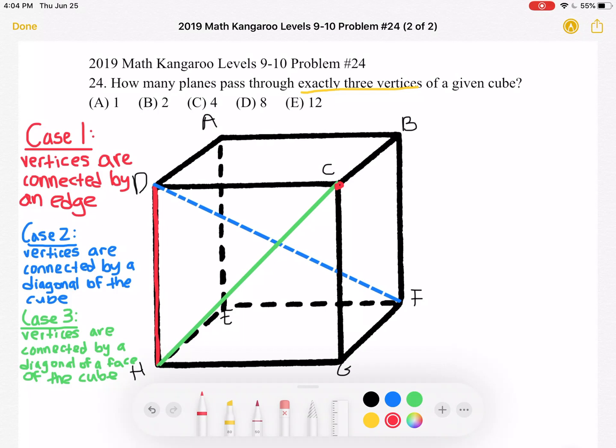Well in this case it's even more obvious. If we have a plane going through d, c and h it will also be going through vertex g. And again we only want the plane to go through three vertices not four.